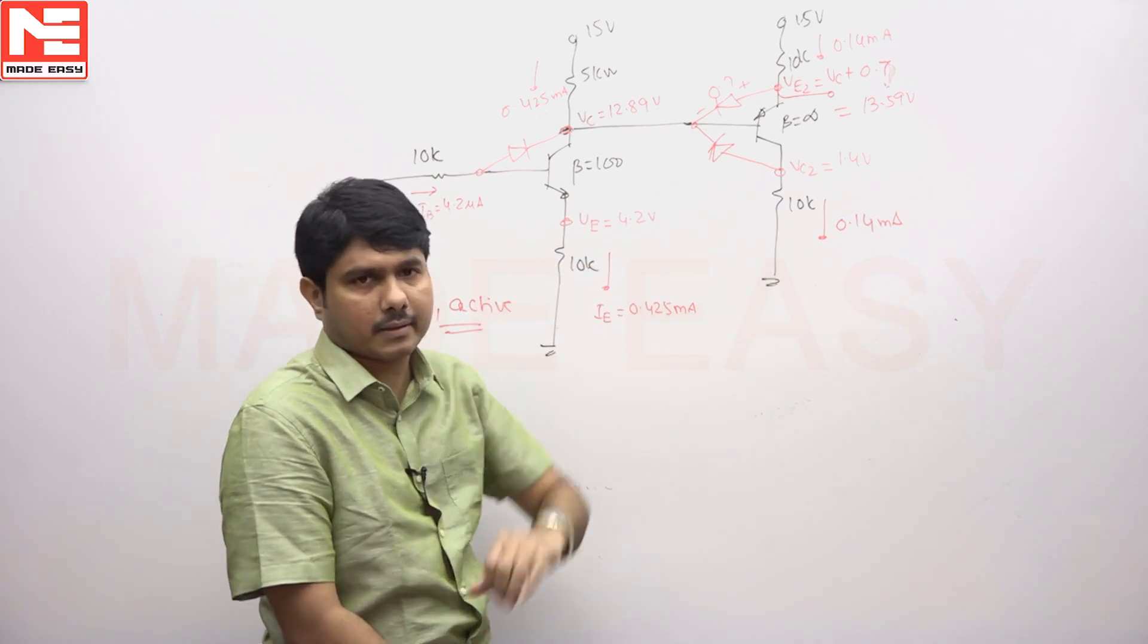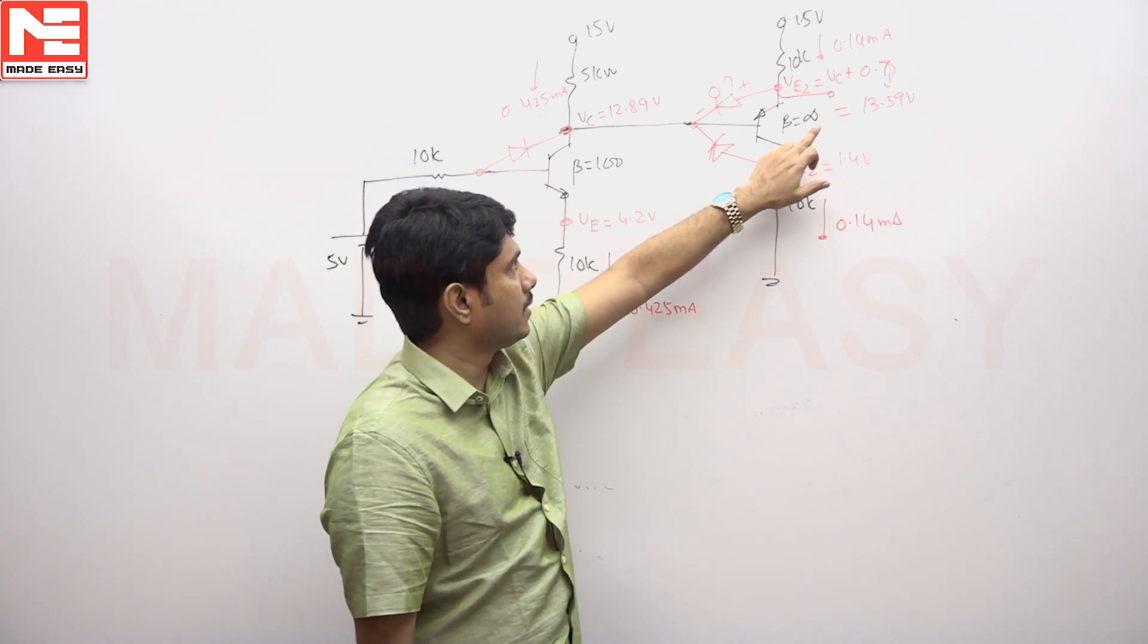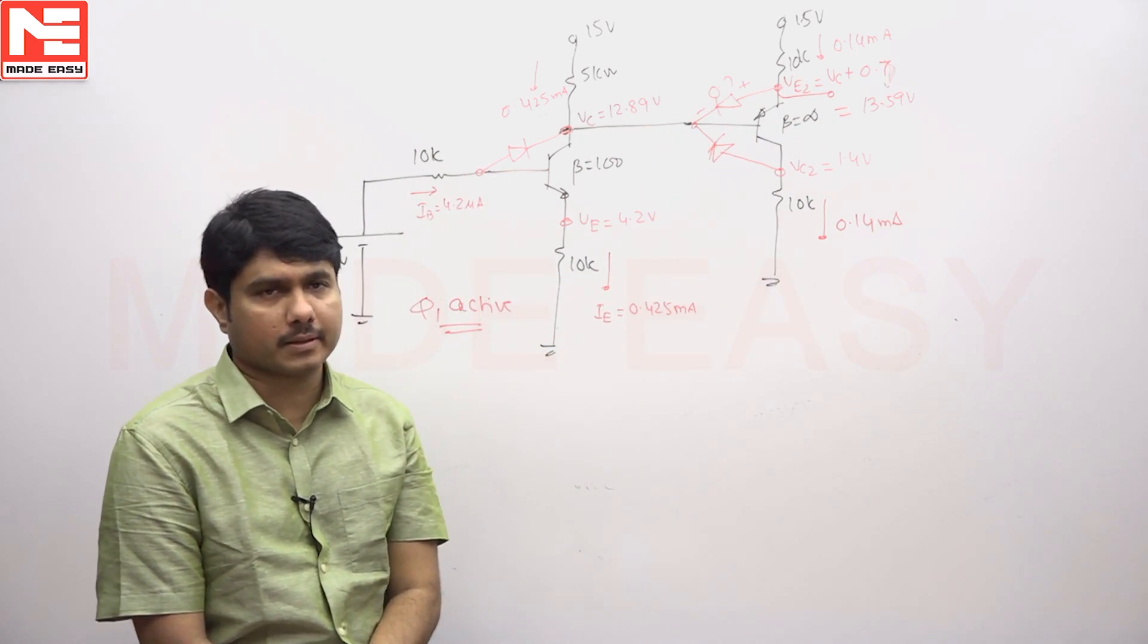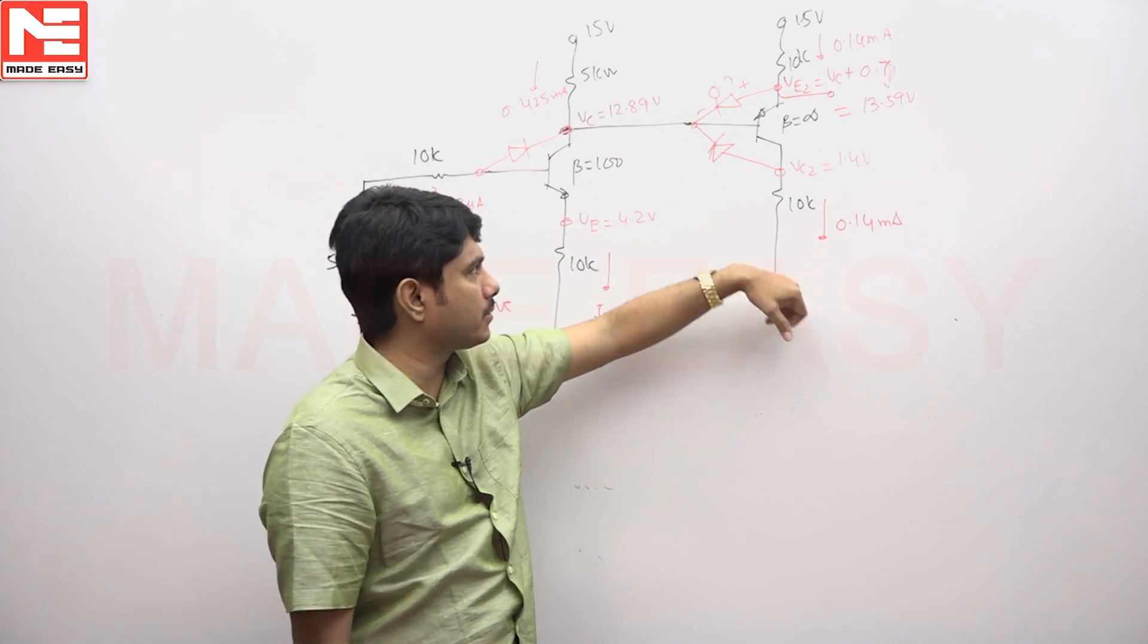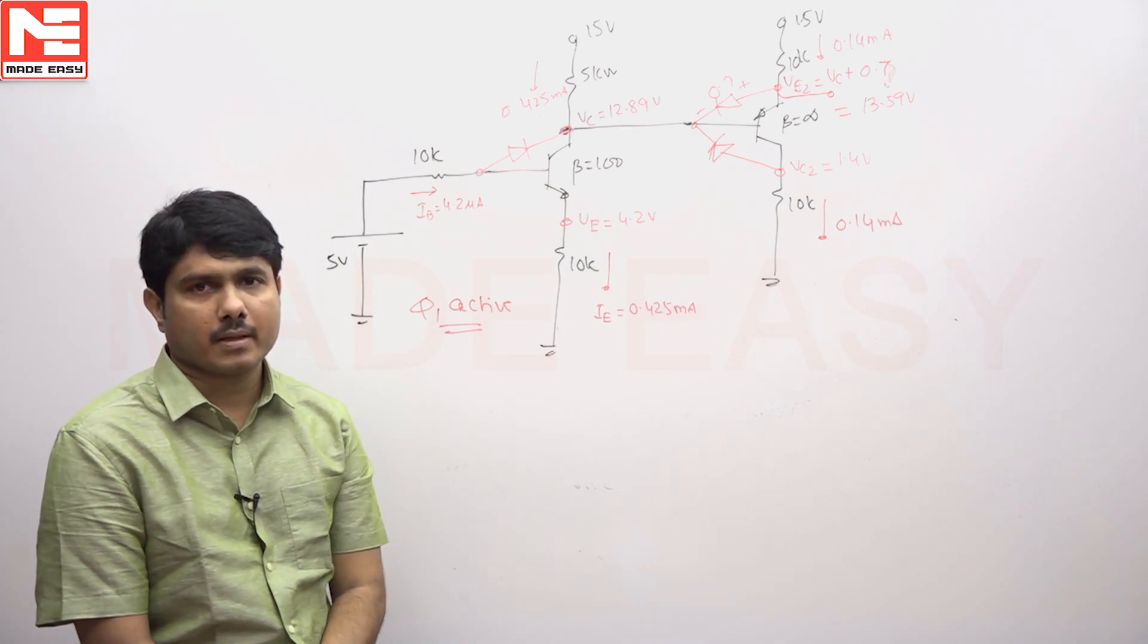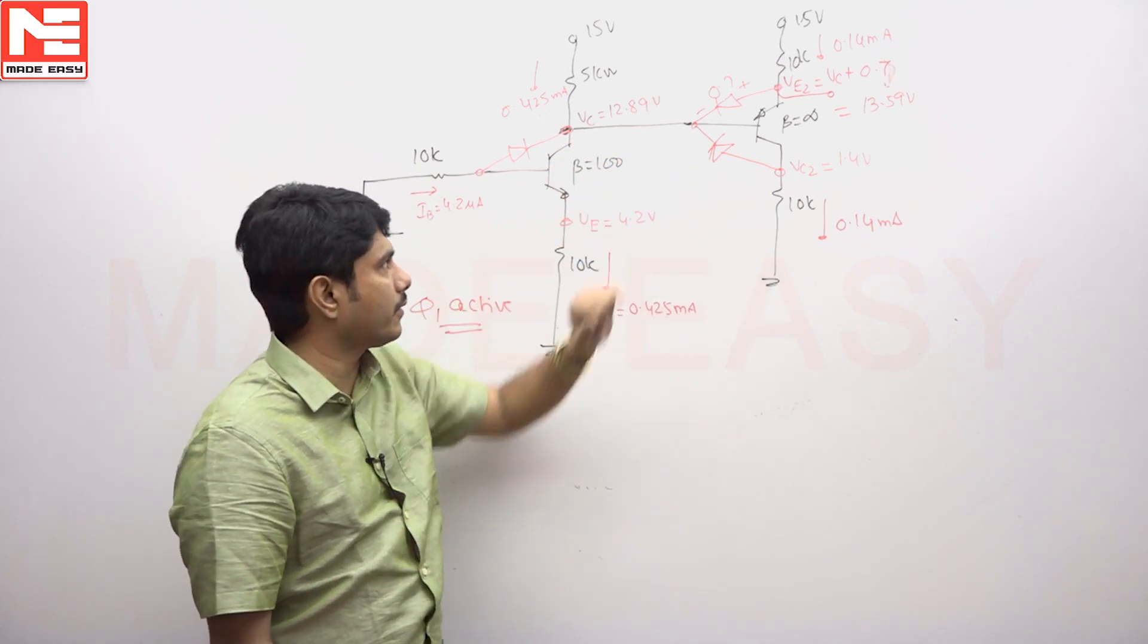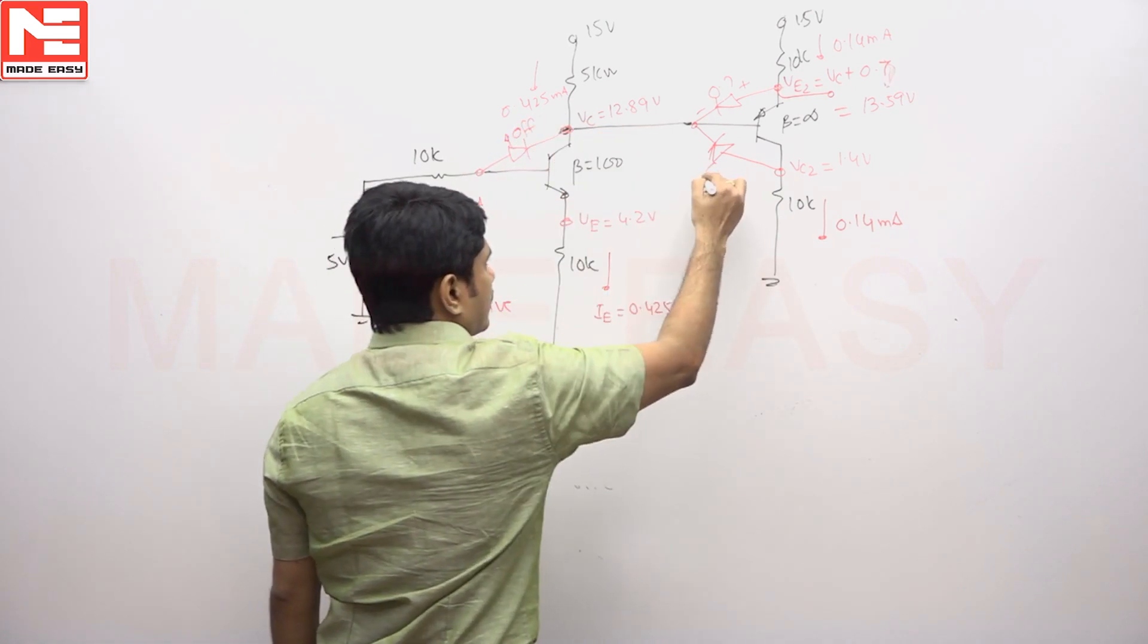If you know that it is getting off, then this is the correct answer for that case. What I have done is 15 minus this potential by 10k. I found that current is 0.14 milliamps. That same current I have taken here, 0.14 milliamps, so VC2 is coming to 1.4 volts. That 1.4 volts is here. Collector voltage is 12.89, which means this is also cut off. So in the first case it is off, and in the second case also it is off.